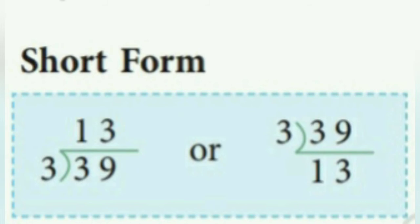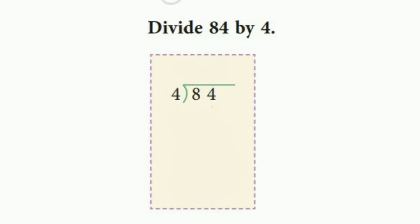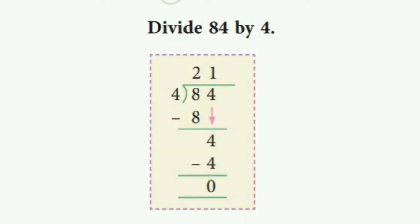Next example: here we have to divide 84 by 4. We write 84 inside and 4 outside. Let's start with the tens place. 4 twos are 8, so we subtract 8. 8 minus 8 is 0. Then we bring down the numeral 4.